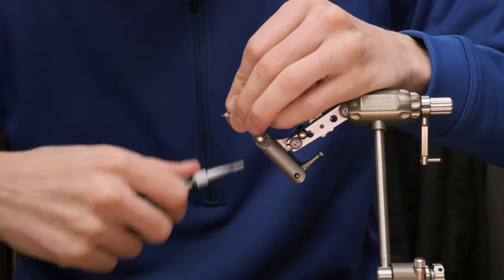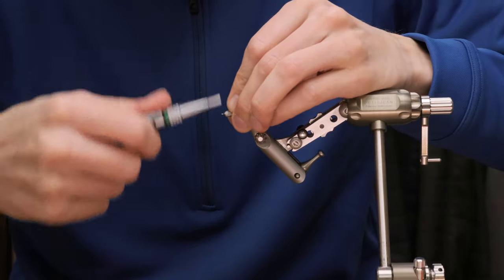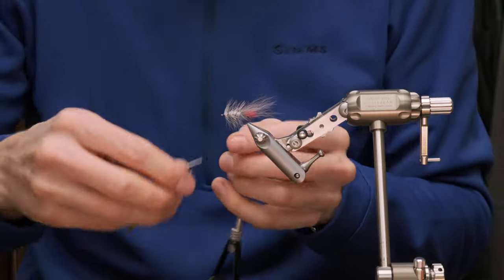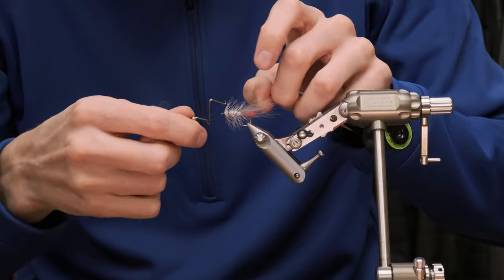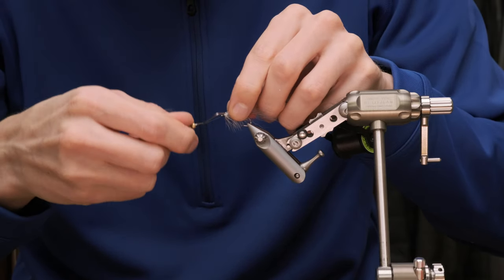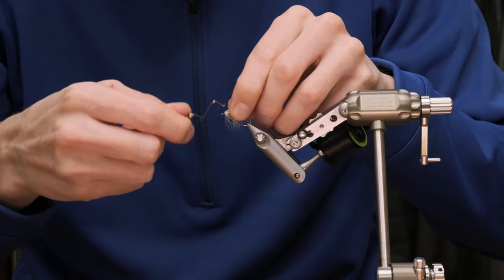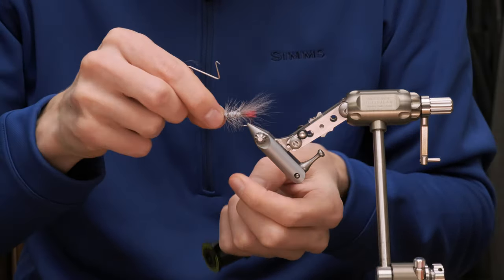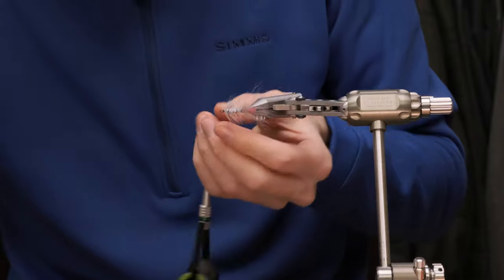This is basically the fly. I'm just gonna whip finish it. Give it a little bit of a brush, pick out some of the dubbing. Give it a brush, a couple of half hitches and some super glue, or just use your whip finisher. I would suggest you use a little bit of super glue on it just to make the fly more durable.